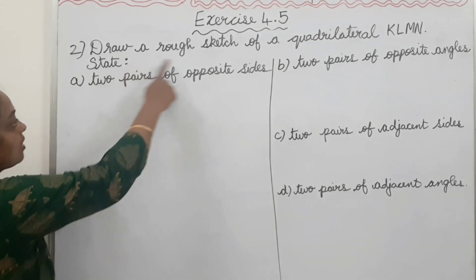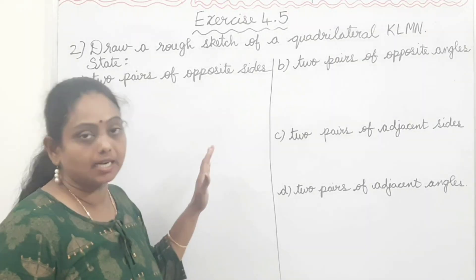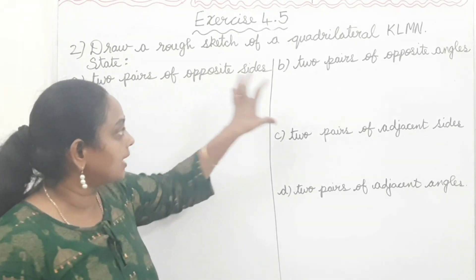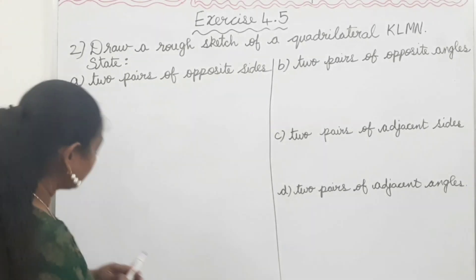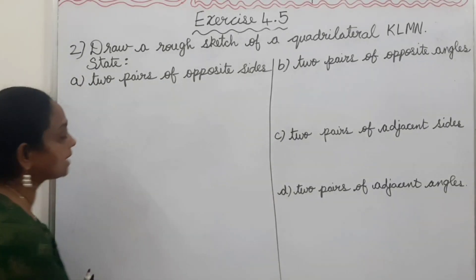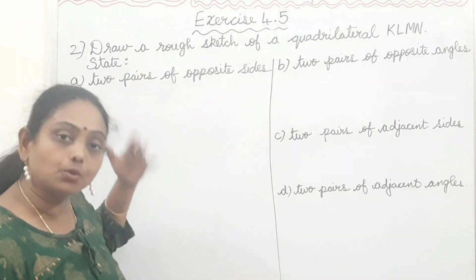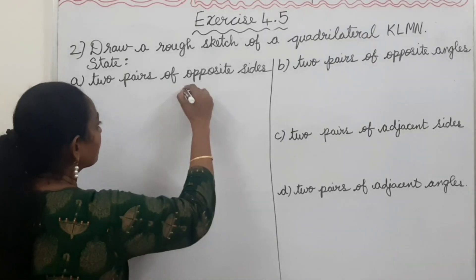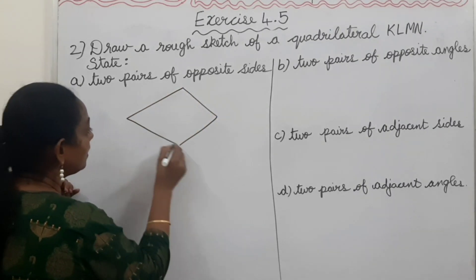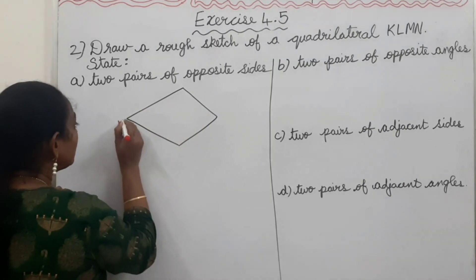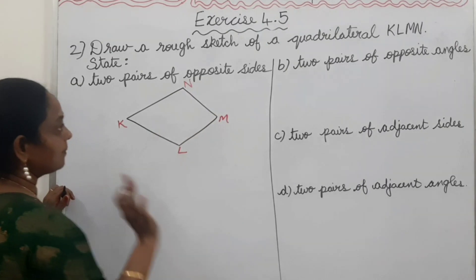Question number 2: Draw a rough sketch of a quadrilateral KLMN. Hamen rough sketch draw karna hai — that is, ek quadrilateral draw karni hai named KLMN. First part: state two pairs of opposite sides. So we draw the quadrilateral and name it KLMN.